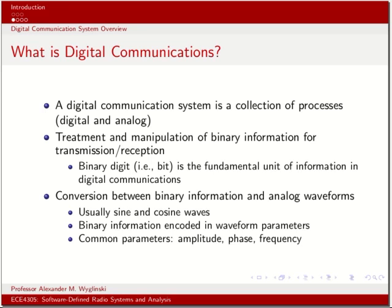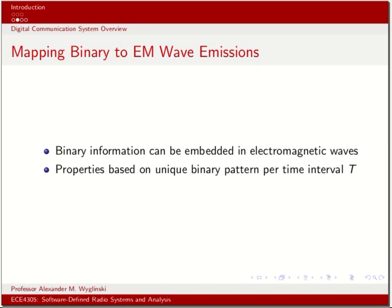The waveforms used extensively in wireless and digital communications are sine and cosine waves operating in electromagnetic frequencies. The degrees of freedom for each cosine and sine waveform are amplitude, phase, and frequency. So digital data transmission is all about mapping ones and zeros into a unique amplitude, phase, and/or frequency value — essentially the fingerprint of that binary pattern — such that if a receiver intercepts that signal, it can then decode, hopefully successfully, what that binary pattern is.